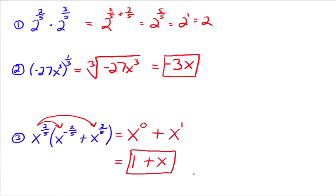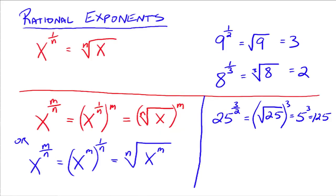All those rules of exponents are not going to change. The only thing we're doing differently is bringing in rational exponents. The general form is x to the m over n — the denominator becomes the index, and you have a couple of options for where the numerator goes. Study well, and please let me know if you have any questions.